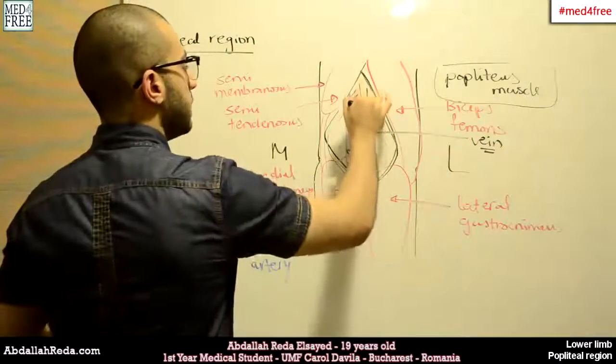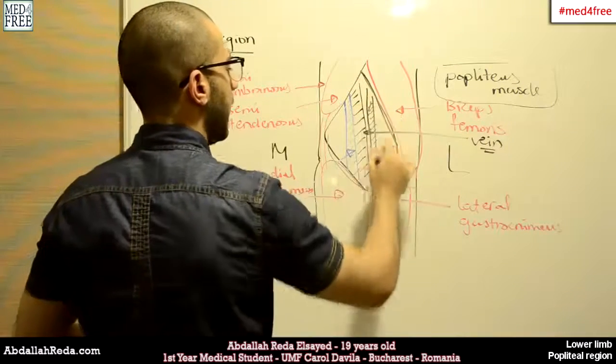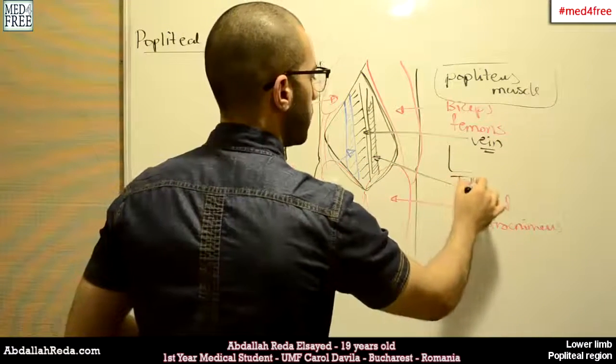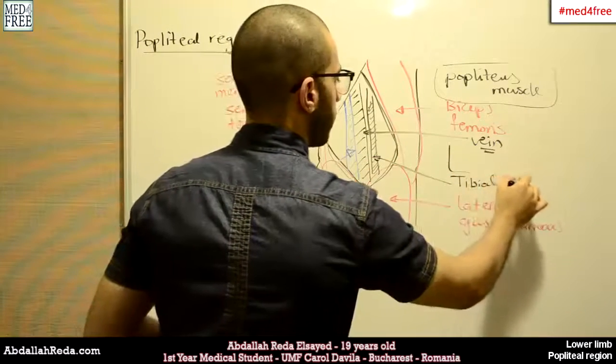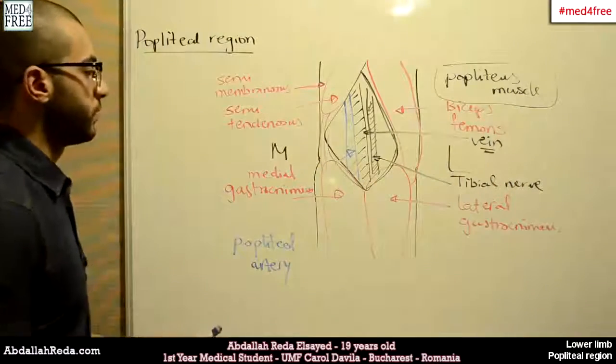And here we have the nerve, and the nerve here is the tibial nerve. So this is the tibial nerve. And this is the popliteal region.